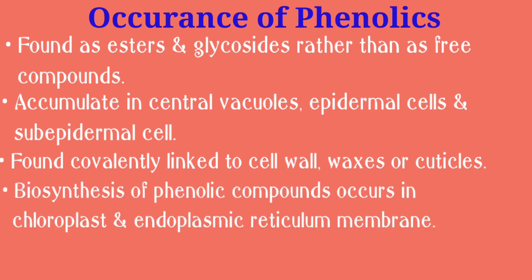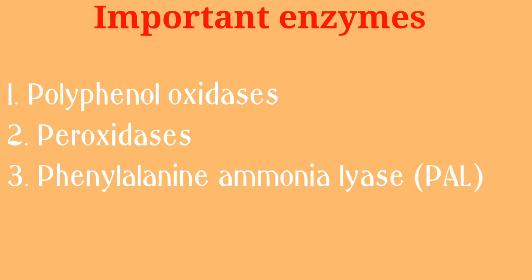Biosynthesis of phenolic compounds occurs at various sites in plant cells such as the chloroplast and endoplasmic reticulum membrane. Important enzymes include: polyphenol oxidases, which oxidize phenols to quinones and have bactericidal and fungicidal properties; peroxidases, which increase the polymerization of phenols into lignins, a complex phenol; and phenylalanine ammonia lyase, which is a key enzyme for the synthesis of phenols, phytoalexins and other defense-related chemicals.